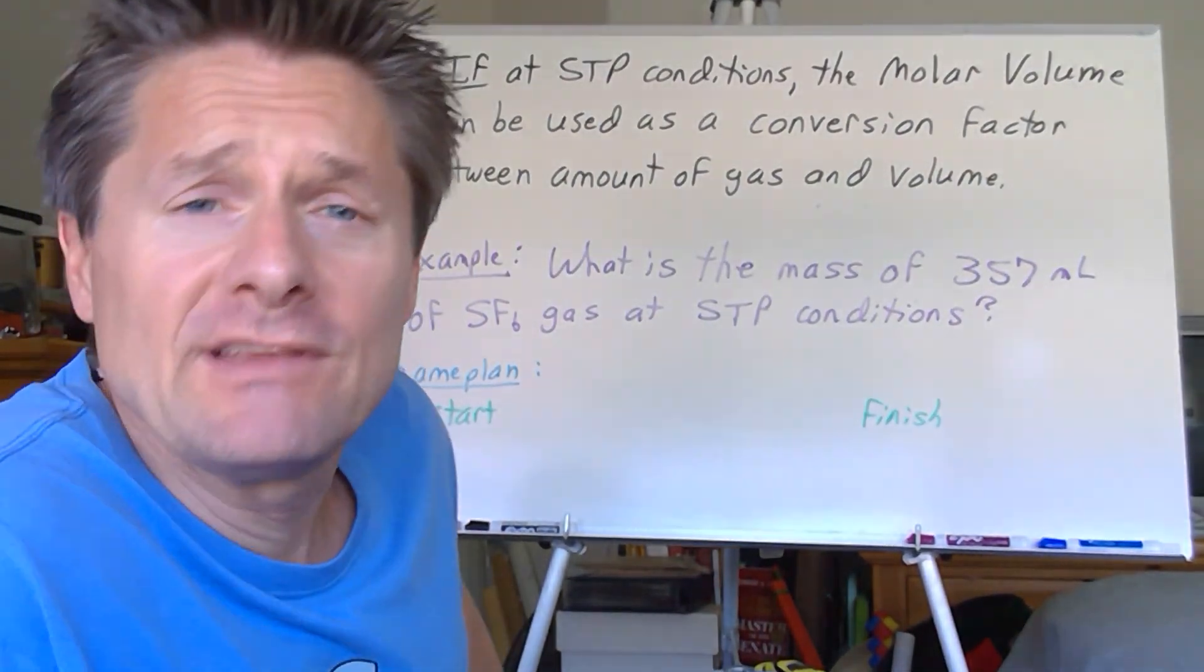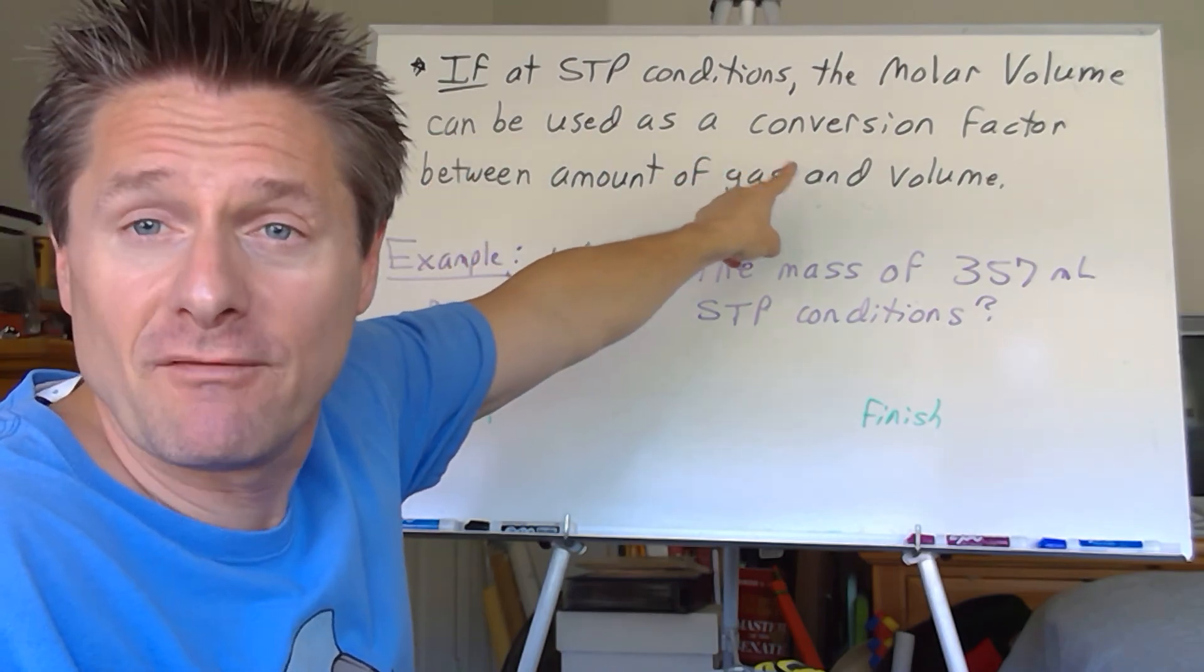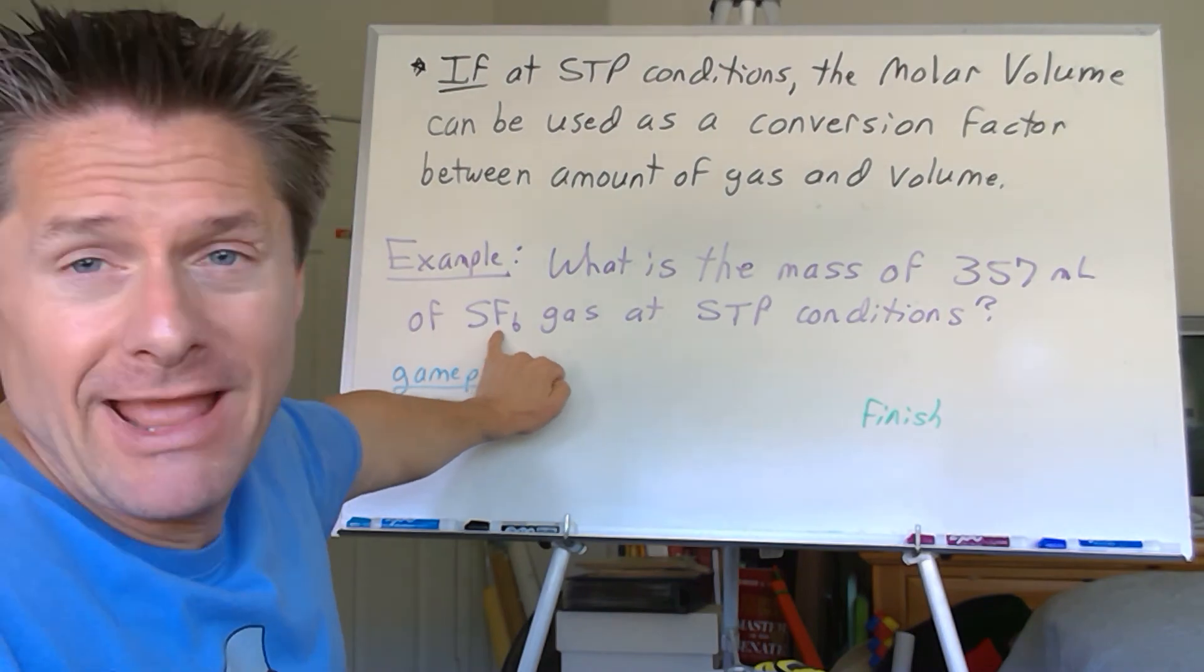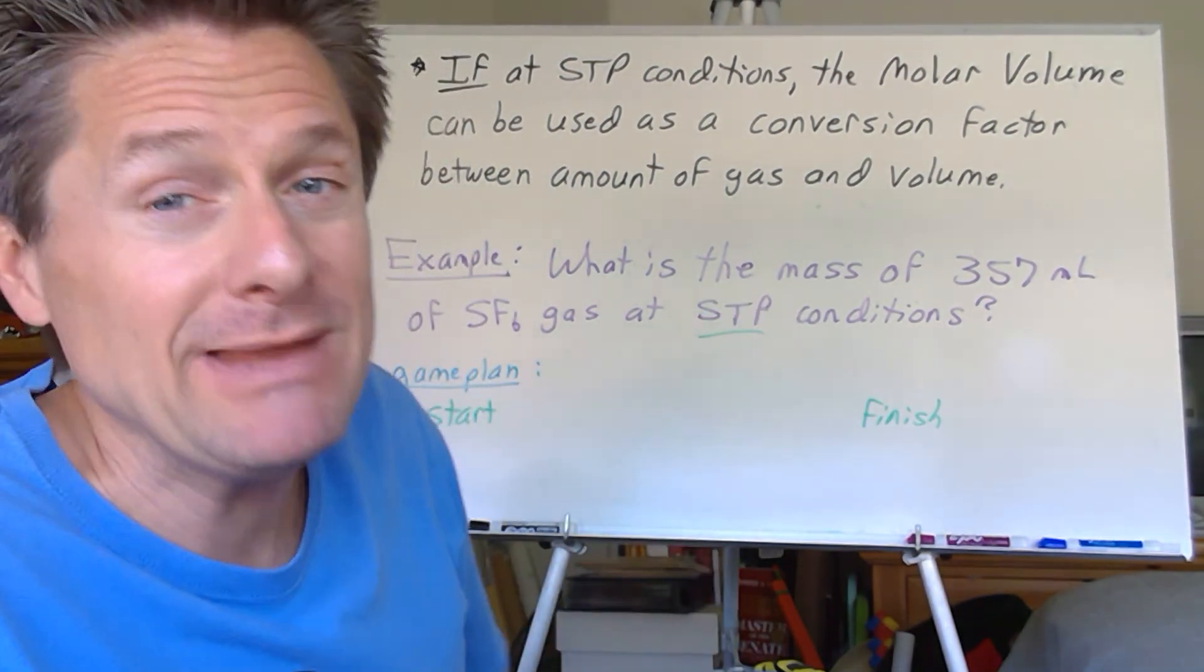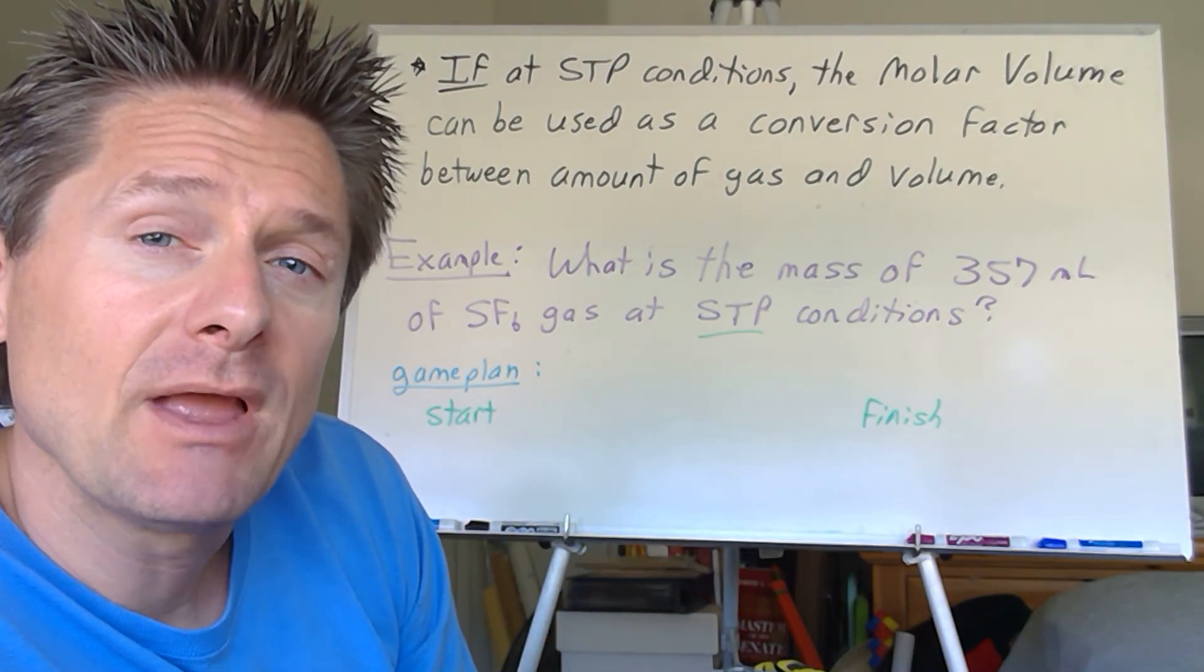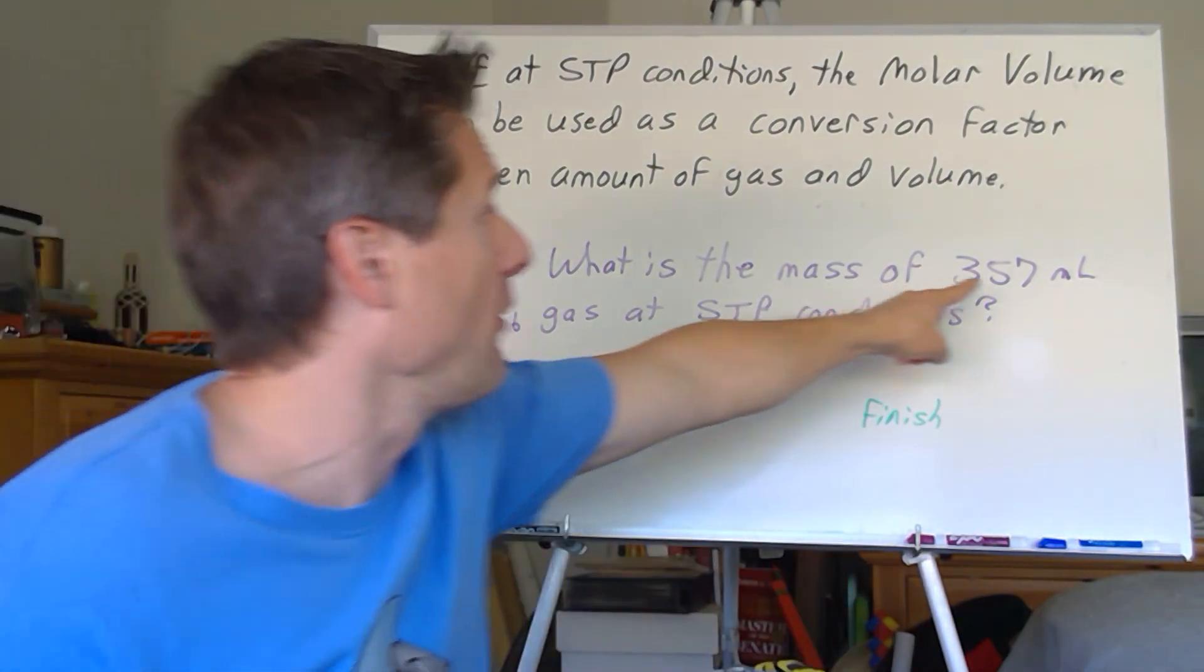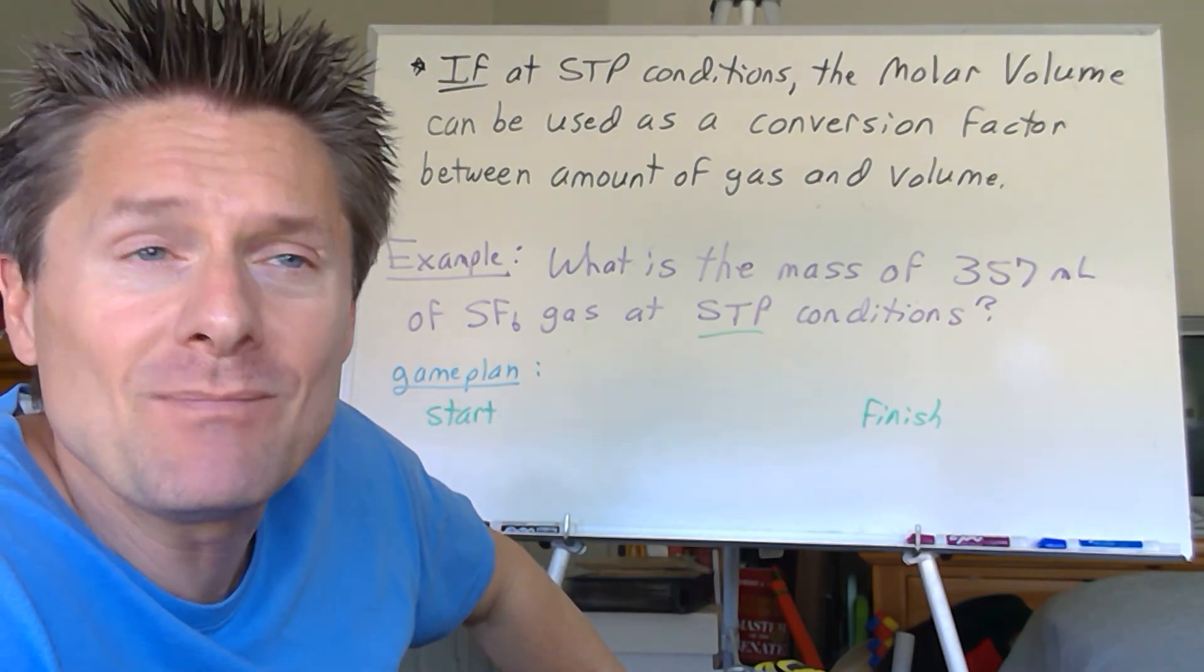Two ways to do these kinds of problems. If you're at STP conditions, the molar volume can be used as a conversion factor between amount of gas and volume of gas. Here's the problem. What is the mass of 357 milliliters of sulfur hexafluoride gas, that's a molecular compound, at STP? Note STP conditions. So we have two ways we can approach this. You can use PV equals NRT, understanding that zero degrees Celsius and one atmosphere pressure, or knowing I'm at STP, I can use that molar volume as a shortcut.